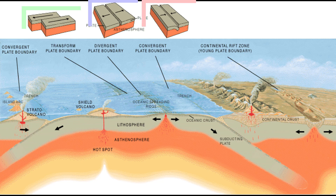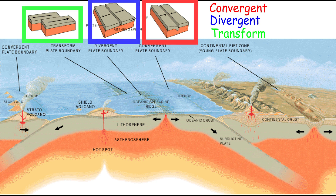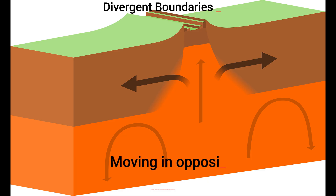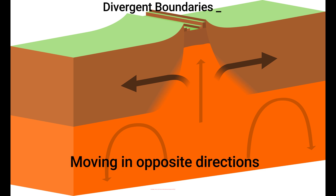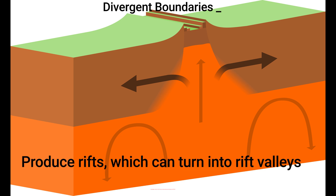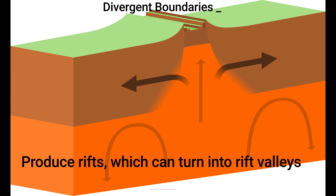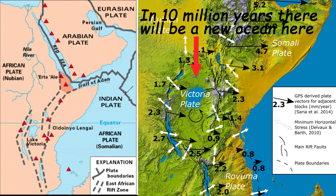Divergent, convergent, and transform boundaries are the three types of plate boundaries. Divergent boundaries develop when two plates separate from one another. They occur because of seafloor spreading in zones of ocean-to-ocean rifting, creating new ocean basins. Divergent boundaries in zones of continent-to-continent rifting may cause the formation of new ocean basins when the continent divides and expands.